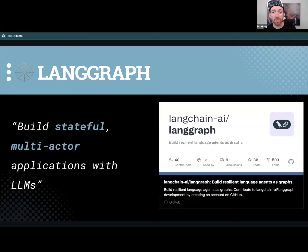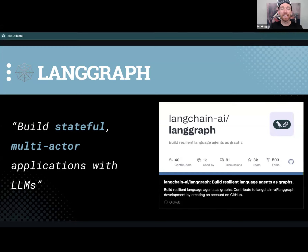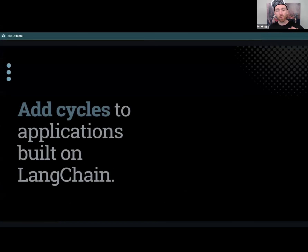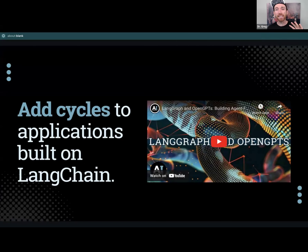LangGraph is all about being stateful — state is the state of affairs throughout the application, capable of maintaining the status of this process where we're doing reasoning and taking actions over and over. LangGraph is about adding cycles to what was built with chains in LangChain — adding that looping to the directed calling of the next step and the next step.